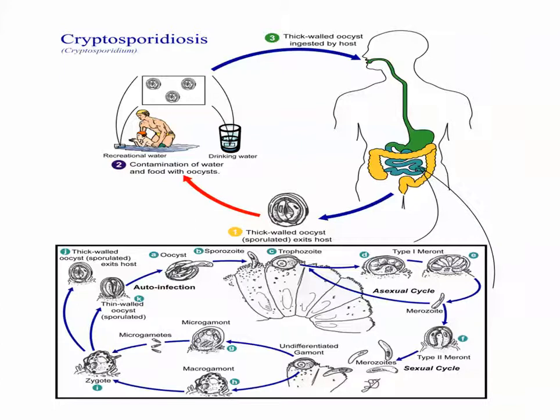We now move to another subject: the miscellaneous protozoa. Miscellaneous protozoa are a large family with many members. They are similar in only one thing — that they are unicellular — but their diagnostic stages, living styles, prevention, treatment, and life cycles are all different from one another. One of the most important miscellaneous protozoa is Blastocystis hominis.